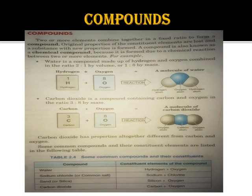Remember, when I talked about elements earlier - elements can form either molecules or compounds. When formed from different elements, they are called compounds. When two elements of the same nature combine, it is called a molecule. Carbon dioxide has properties altogether different from carbon and oxygen individually. Common compounds include: water (H and O), sodium chloride or common salt (Na and Cl), sand or silica (Si and O), and carbon dioxide (C and O).